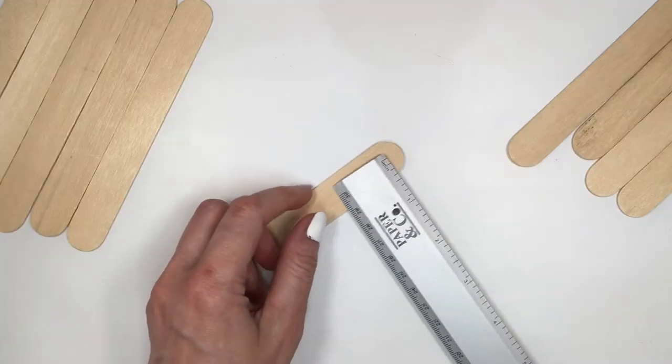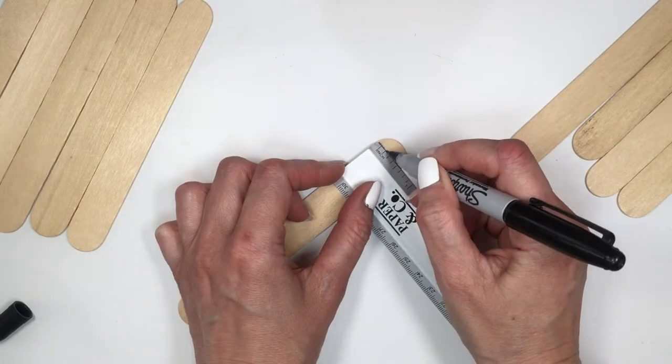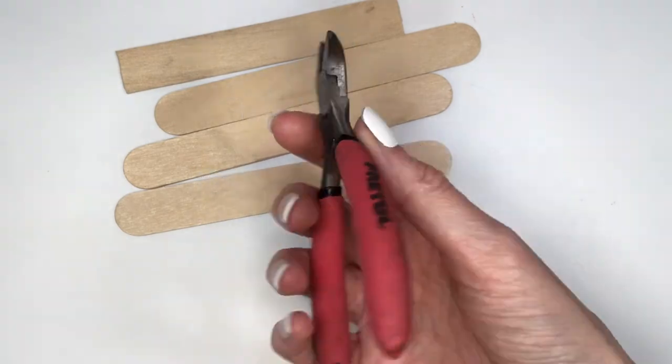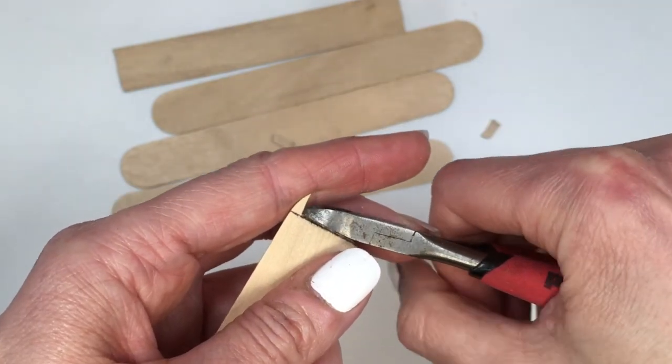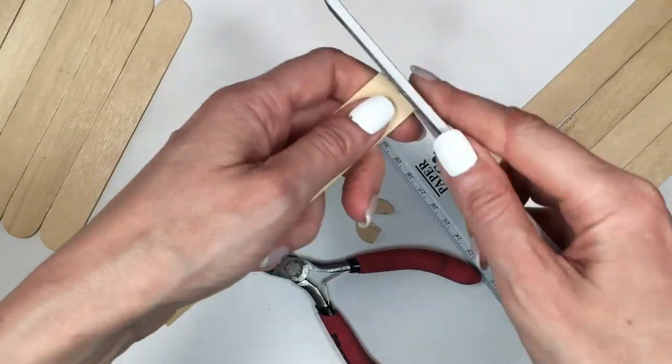And while most of these sticks have like round edges, I'm going to be using my ruler, my sharpie, and then just going with my cutters, cutting the excess. And then just to make this smooth, I'm going to be filing this with my nail file until it's soft.